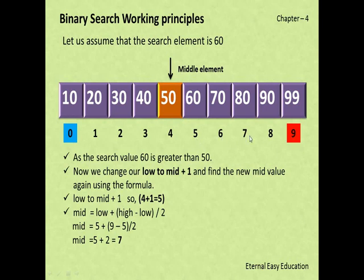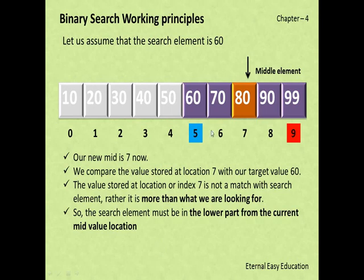With low = 5 and high = 9, we calculate the new middle value using the formula: mid = 5 + (9 − 5) / 2 = 7. Now the lowest value is 5, the highest is 9, and the middle element is at index 7. We can ignore indices 0 to 4. The element at index 7 is 80.